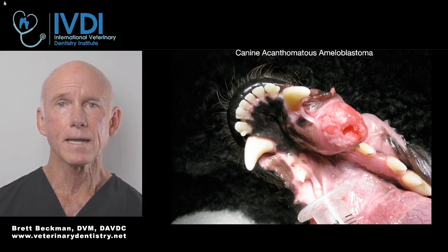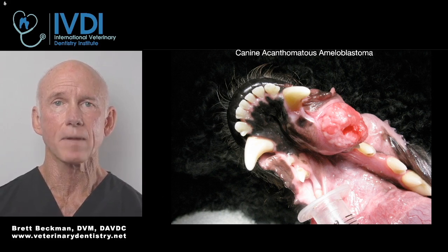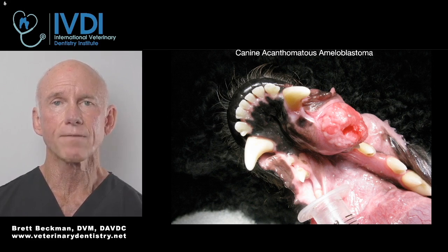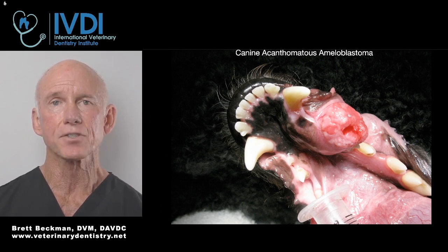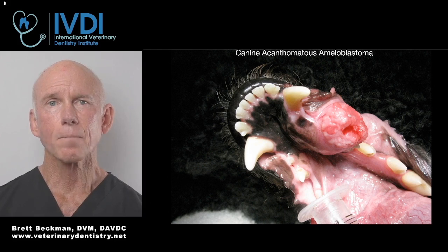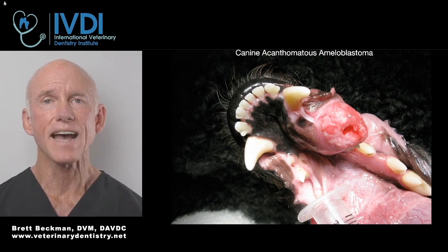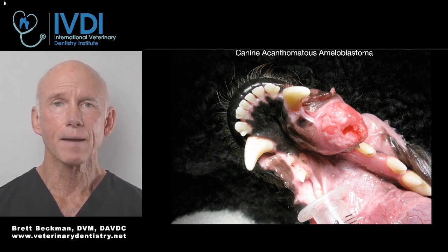The third type is the acanthomatous epulus under the previous nomenclature, now called the canine acanthomatous ameloblastoma. These are often cauliflower-like and more proliferative. They do involve bone in many cases, and that bone can be proliferative, but most often it is destructive — though it can be both proliferative and destructive. Further sub-classifications include the less common conventional acanthomatous ameloblastoma and the amyloid-producing ameloblastoma, both of which tend to be cystic and can be more aggressive.